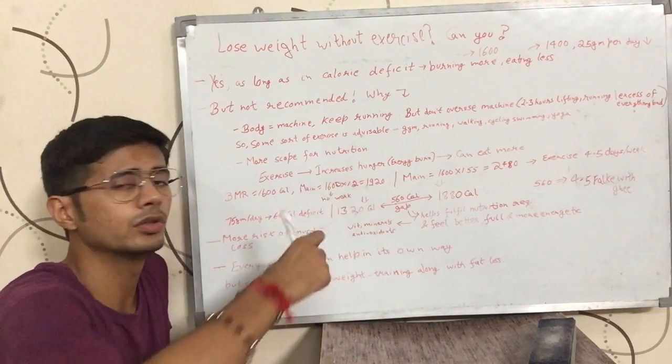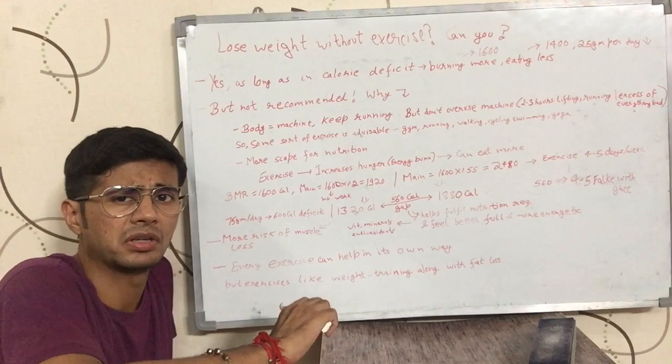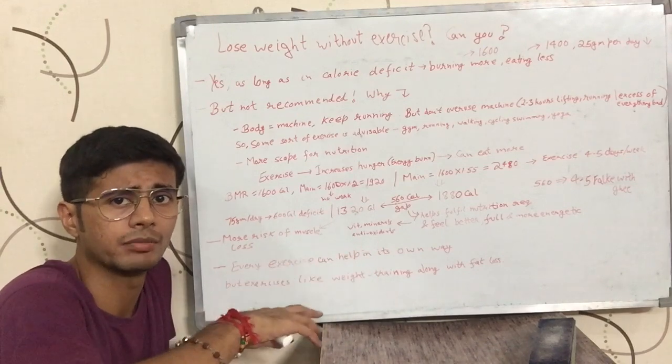If you are a male and your BMR is 1600 calories and your maintenance comes out to be 1920 calories, multiplying 1600 by 1.2. When you are doing nothing but mostly going to office, sitting on the desk, doing your work, coming back to home.